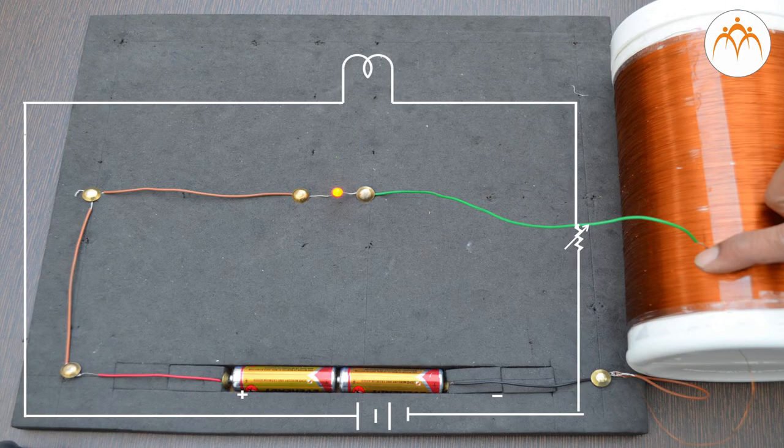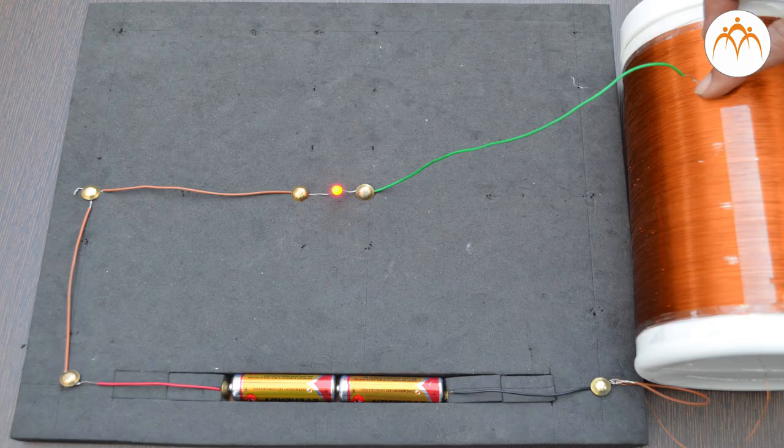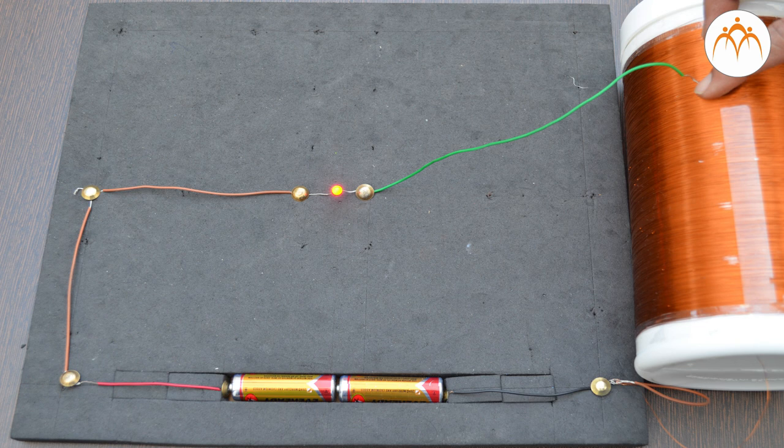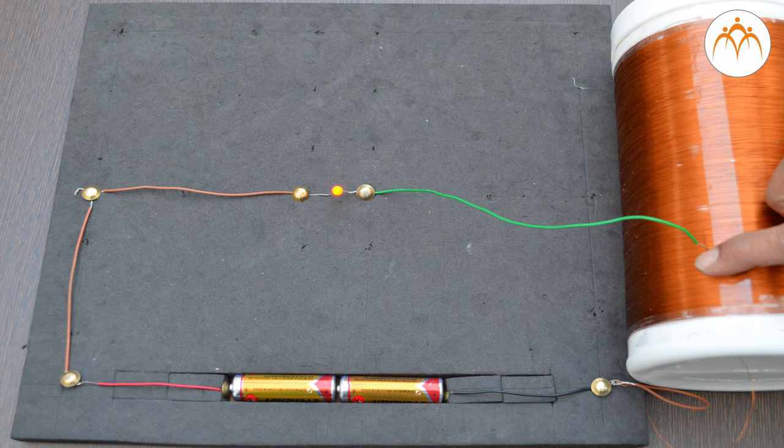When variable resistance is required in the circuit, rheostat is used and is indicated with this symbol. Using the slider provided, we can decrease or increase the resistance of the device. They are used to divide the voltage or control the current through a circuit. Rheostats are often used as power control devices, for example, to control the speed of an electrical motor, to control light intensity, make them brighter or dimmer, to control the temperature in electric ovens and furnaces.